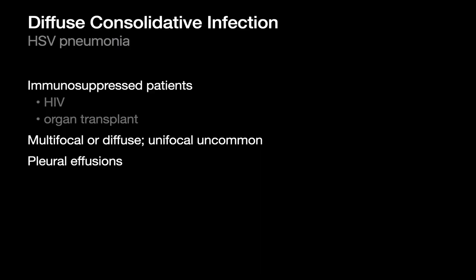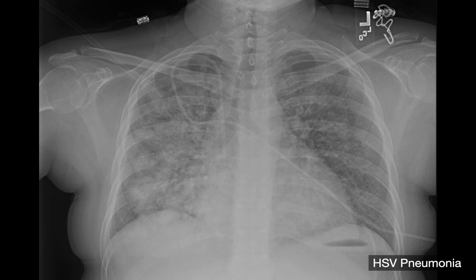HSV pneumonia is another potential cause of diffuse consolidated lung infection in immunosuppressed patients. These can present diffusely or non-diffusely and may be associated with pleural effusions — more so than in Pneumocystis infections. Here's a case of relatively symmetric, albeit somewhat heterogeneous, consolidation due to HSV pneumonia.